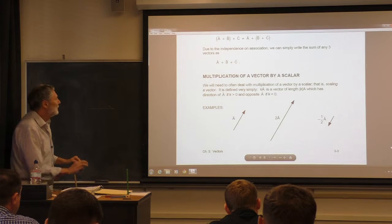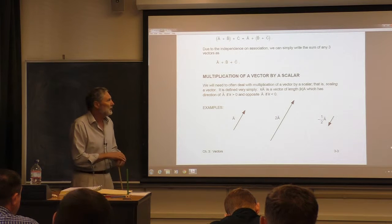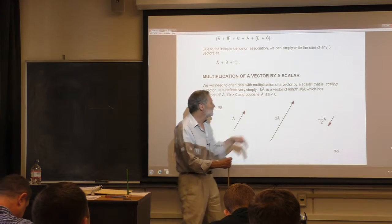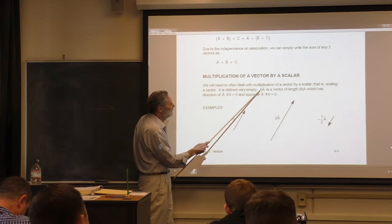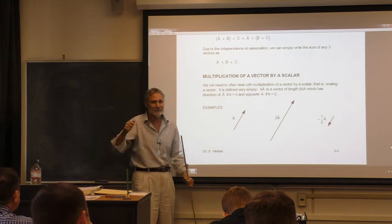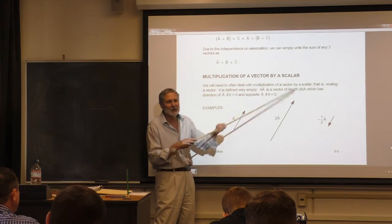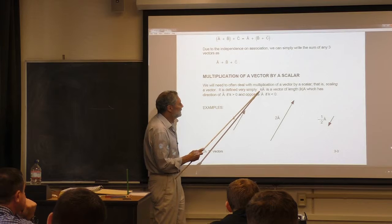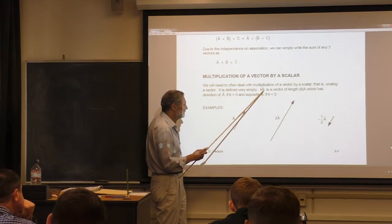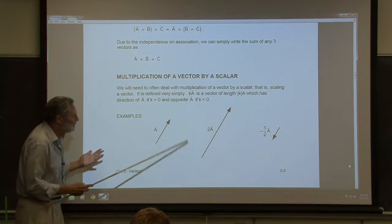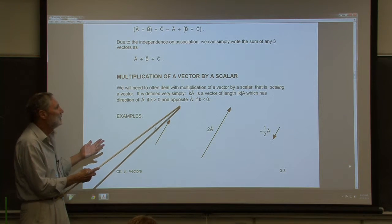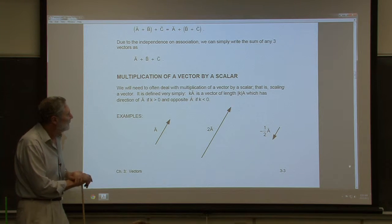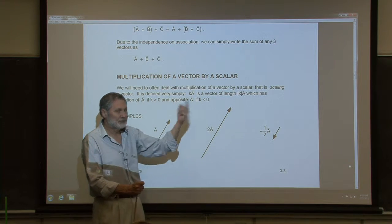We need to be able to multiply a vector by a scalar. This is actually why it's called a scalar — because when we multiply a vector by a pure number, we are scaling it. The number can be positive, negative, or zero. If k is two, we double the length — the magnitude is multiplied by k. If k is negative, it flips the direction.